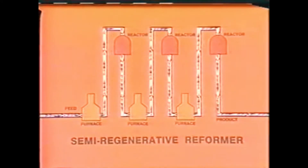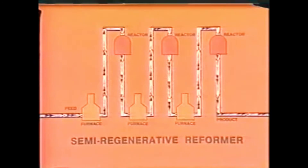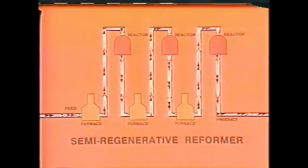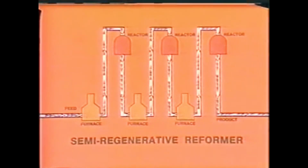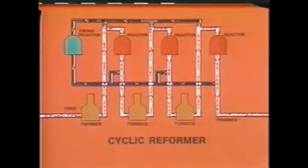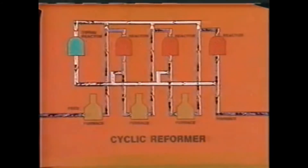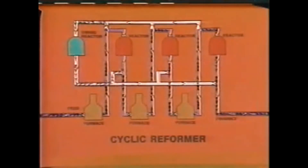The first type of unit is called a semi-regenerative reformer. With this type of reformer, the reactors run several months or more between regenerations. When the catalyst needs cleaning, the entire unit is taken off-stream so that all of the catalyst can be regenerated at the same time. The main disadvantage of this method is that a complete shutdown is required to clean the catalyst. Some units are equipped with a swing reactor so that part of the catalyst in the system can be regenerated while the other three reactors are in operation — this is called a cyclic reformer. Because the catalyst is cleaned in cycles, it is not necessary to shut down the unit for regeneration.